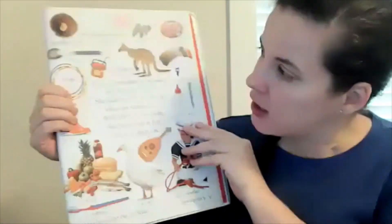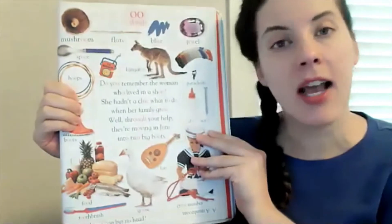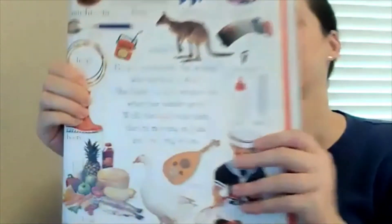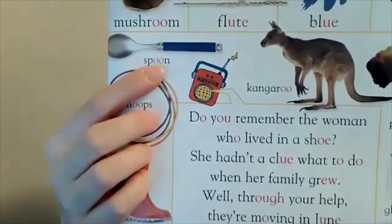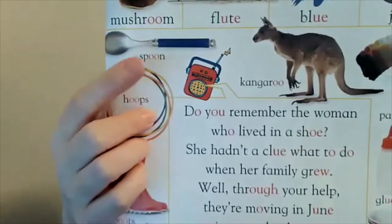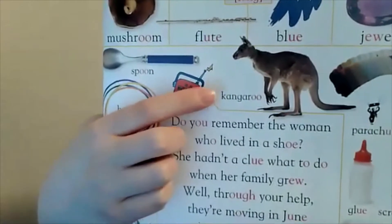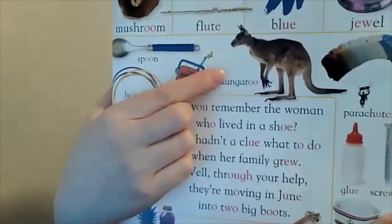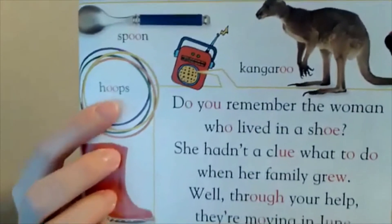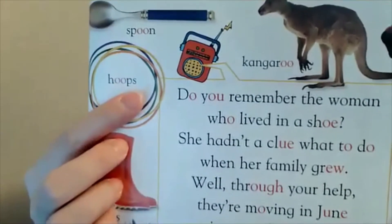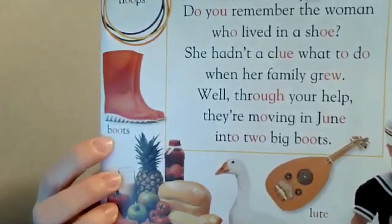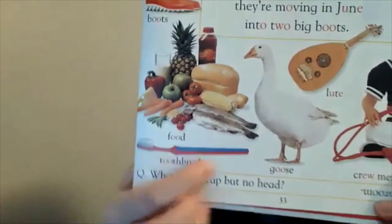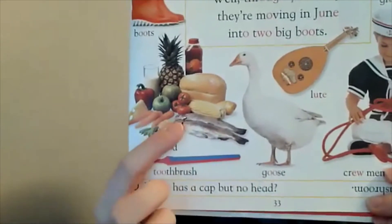Let's get a closer look at all these pictures and where the OO sounds are in the words. Remember, the sounds can be at the beginning, middle, or end. Here we have 'spoon' — double O. And 'kangaroo' — double O. Also 'hoops' and 'boots' — both double O sounds. Moving down: 'food,' 'toothbrush,' and 'goose' — all double O's.